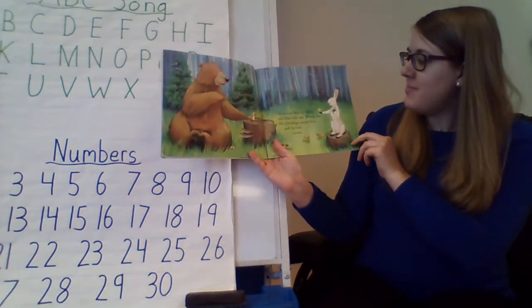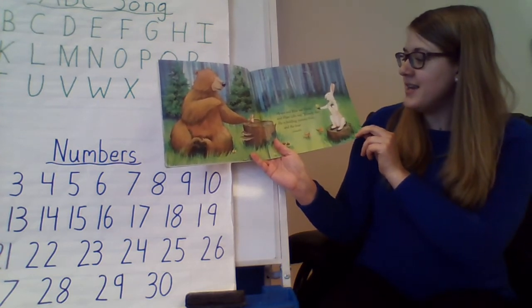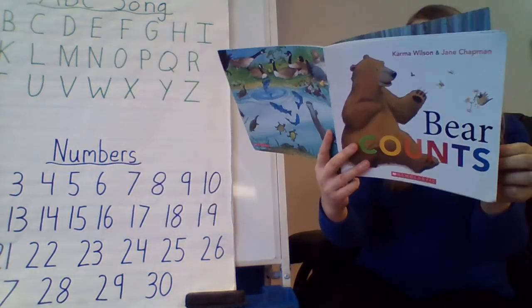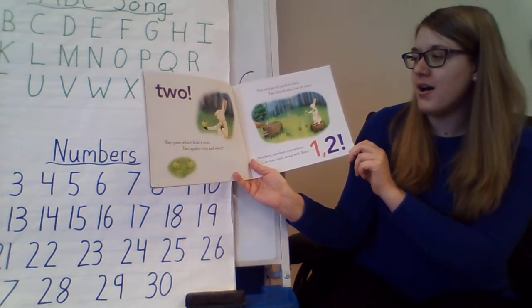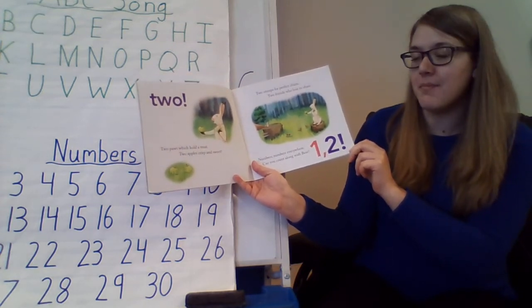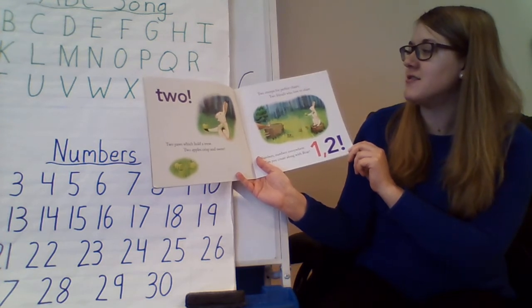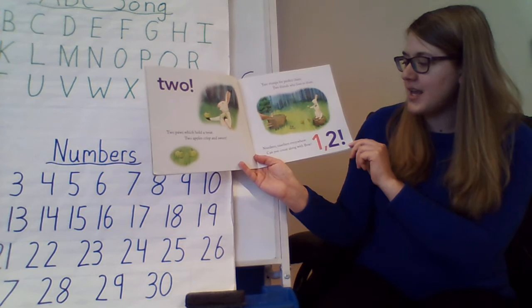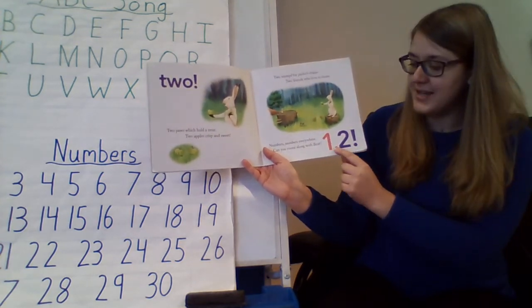Mouse and Bear see Hare, and Hare calls out howdy do. He is holding yummy fruit, and the bear counts two. Two paws which hold the treat, two apples crisp and sweet, two stumps for perfect chairs, two friends who love to share. Numbers, numbers everywhere. Can you count along with Bear? One, two.